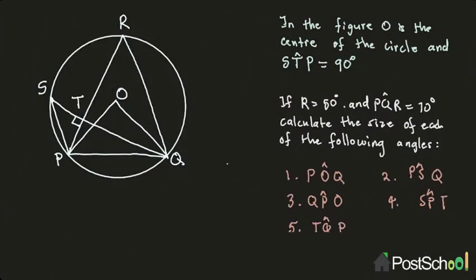All right, so now let's look at this type of question. In the figure, O is the center of the circle. You should be looking out for a center theorem — angle at center is two times angle at circumference. STP is equal to 90 degrees as indicated. R is equal to 50 degrees, and PQR is equal to 70 degrees — PQR is all of this angle, and they're telling us that is 70 degrees.